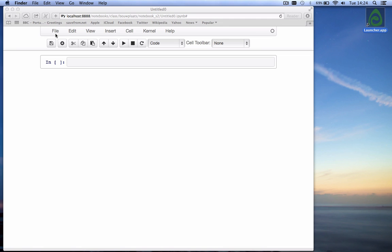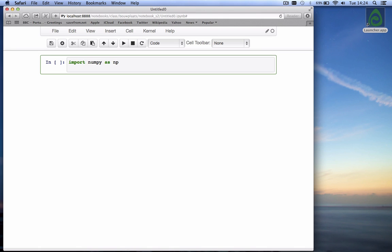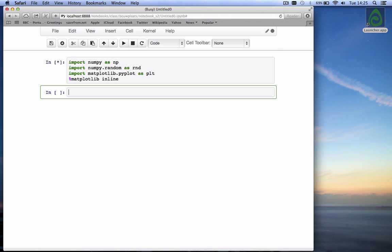We will start by drawing a set of numbers from a normal distribution, and for that there is a function called standard_normal which is part of the numpy sub-package random. So we first import numpy as np, import numpy.random as rnd, import matplotlib.pyplot as plt and we set matplotlib to be inline.